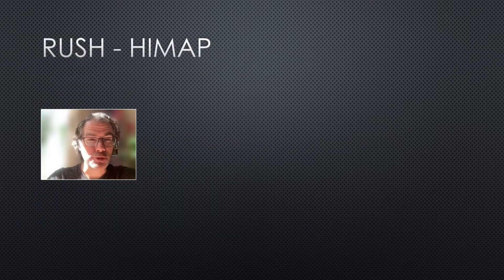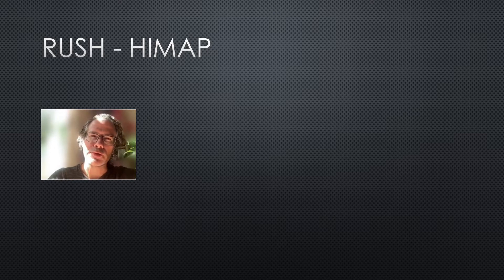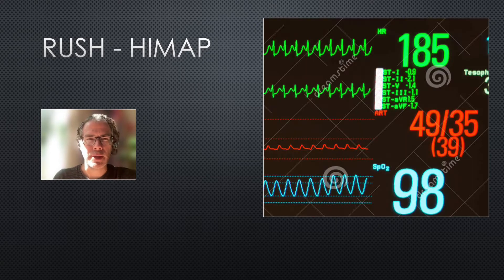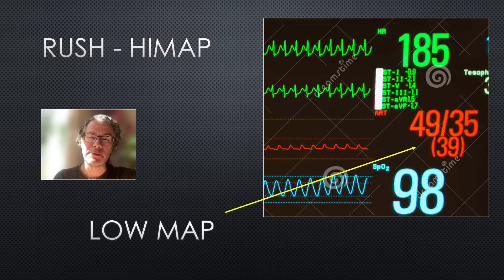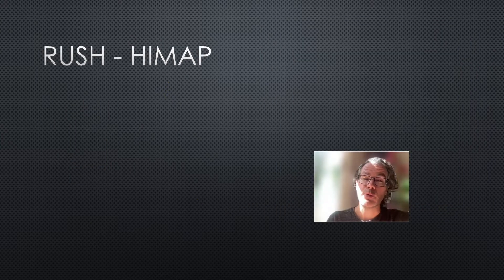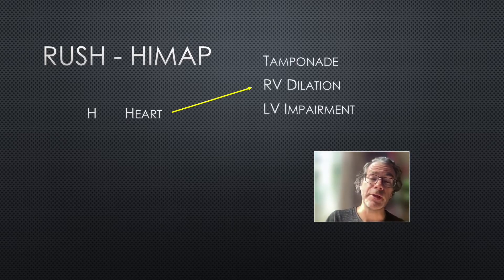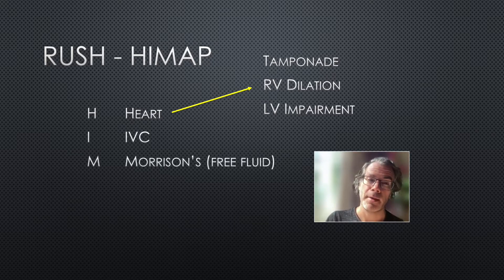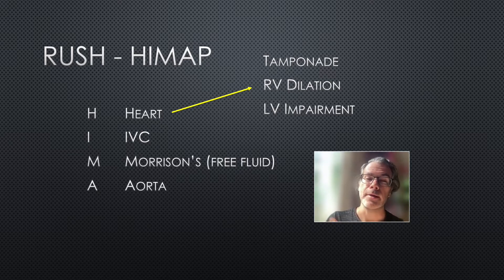I used a structured protocol for patients with undifferentiated shock called the RUSH exam, also known as HIMAP. The idea is the patient has a low MAP or mean arterial pressure and you want them to have a high MAP. HIMAP is also a mnemonic: H for heart, looking for tamponade, RV dilation, and LV impairment; I for IVC; M for Morrison's pouch — really free fluid in the abdomen; A for aorta; and P for pneumothorax.